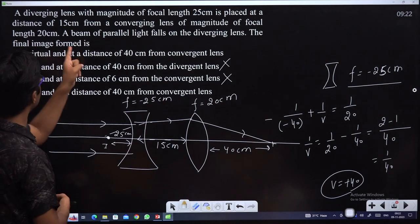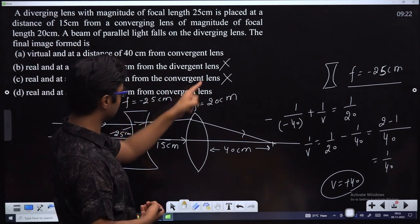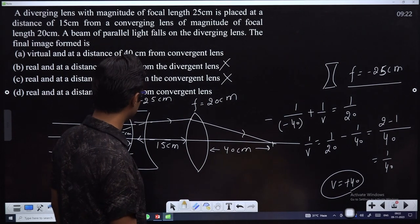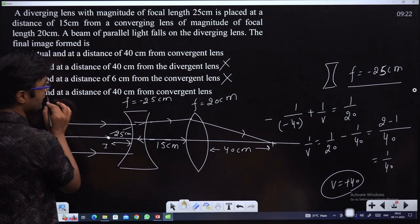The final image formed is real and at a distance of 40cm from the convergent lens. It's real.